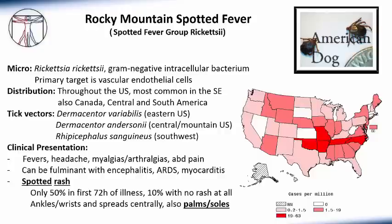Clinically, Rocky Mountain Spotted Fever typically presents with high fevers, headaches without meningismus, myalgias, arthralgias, and abdominal pain. This disease can be fulminant and carries up to a 10% untreated mortality. In severe cases, you can see encephalitis with permanent neurologic damage, lung damage leading to ARDS, and severe myocarditis — all due to vascular endothelial damage and capillary leak.